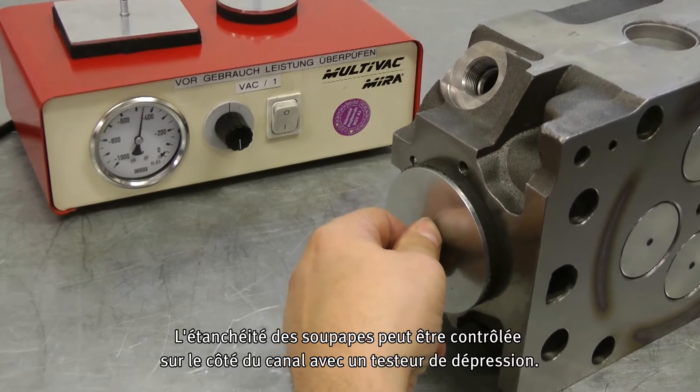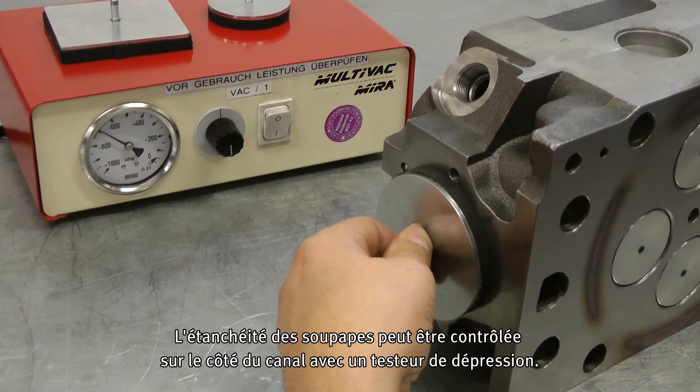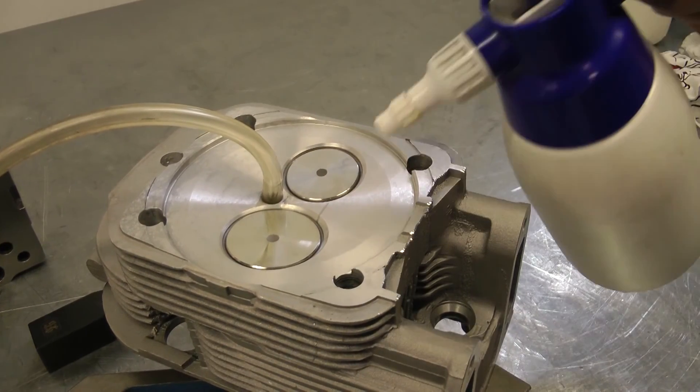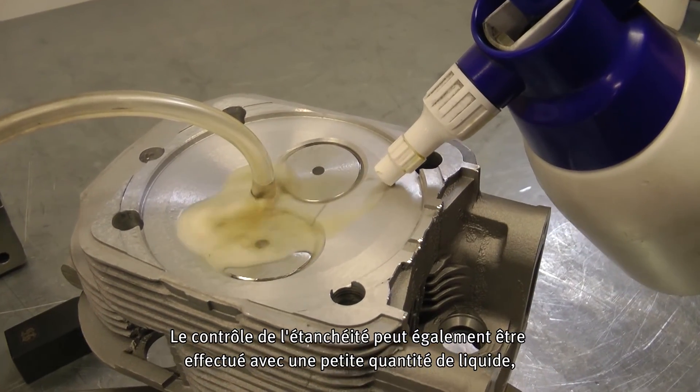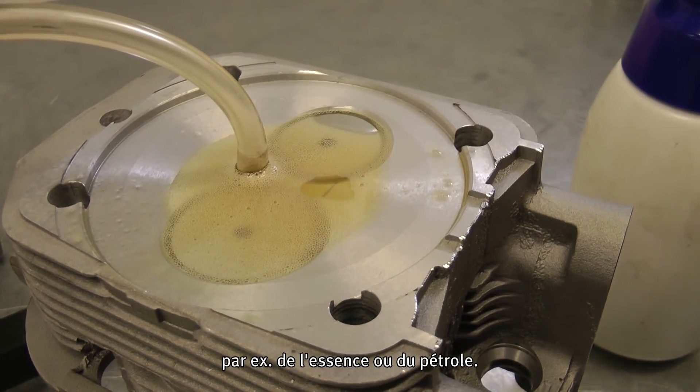The valve tightness can be tested from the duct side with a low pressure testing device. Alternatively, the tightness can also be tested with a small amount of fluid like petrol or petroleum.